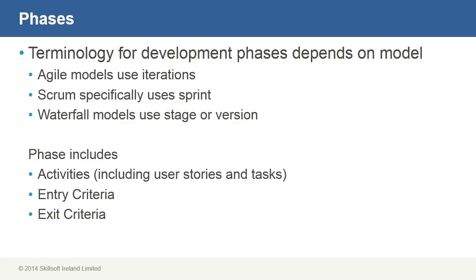Generally, phases include activities — for example, user stories and tasks. Activities are significant deliverables. They have defined begin and end dates, as well as well-defined steps or tasks. They include the capture of user stories that act as inputs for product requirements. It's not uncommon for activities to have interrelationships with other activities, and activities can often have, as part of their requirements, the successful completion of other activities.